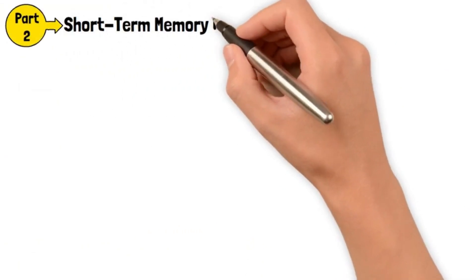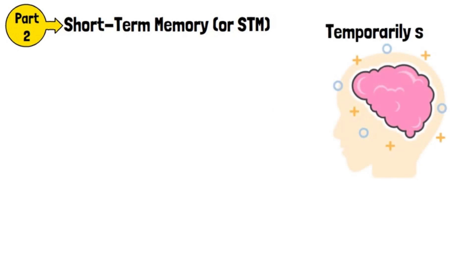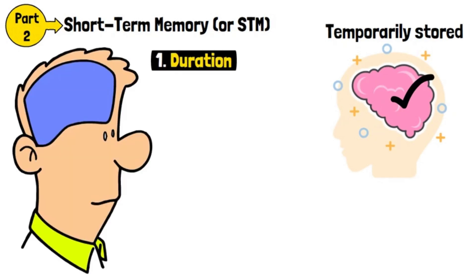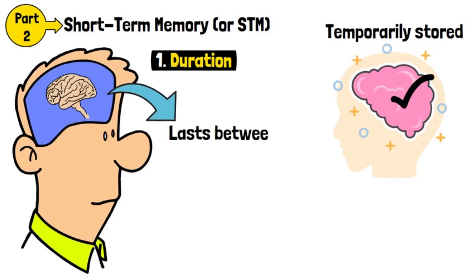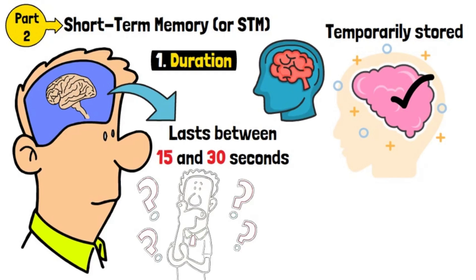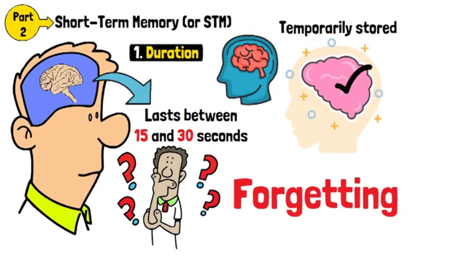Short-Term Memory, or STM, is where information is temporarily stored. This system has specific characteristics. Duration: Information in short-term memory typically lasts between 15 and 30 seconds. Without rehearsal, it fades quickly, leading to forgetting.